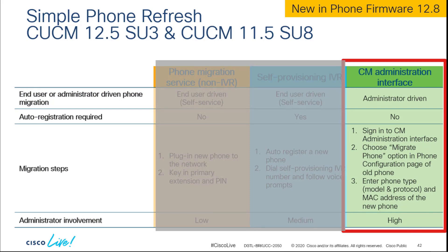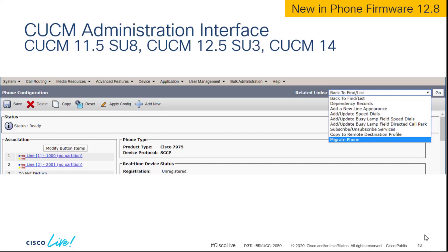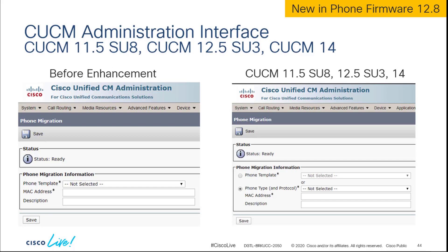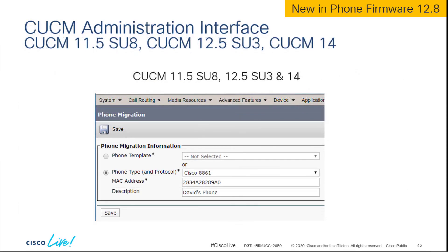Our last method for Simple Phone Refresh is using the CUCM admin interface. Administrator involvement is higher here because there's no pathway for the end user to do anything. The other methods can scale more since you can have the end user do it themselves or delegate to the help desk. With this method, you go to your old 7900 series phone in Call Manager, choose Migrate Phone from the top right, and select the phone type and protocol — for example, selecting an 8861 and its MAC address — and migrate that phone as the administrator.